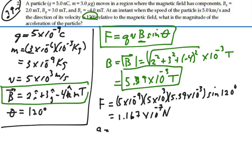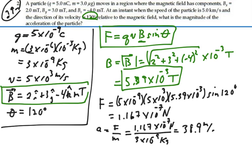So that is 1.167 times 10 to the minus 7 over the mass of this particle, which was given as 3 micrograms. So we have 3 times 10 to the minus 9 kilograms. This was newtons. And so that is going to give us 38.89 meters per second squared. So the acceleration of this particle is 38.9 meters per second squared.